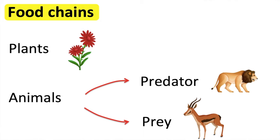A food chain shows us how plants and animals depend on each other for food. The energy in the food passes along the food chain. Food chains usually begin with a plant and end with a large animal.